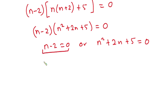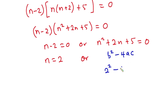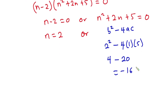From the first factor, n minus 2 equals 0, so n equals 2 straight away. For the quadratic, let's check whether it has real roots using the discriminant b squared minus 4ac. Here b is 2, a is 1, and c is 5, so we get 4 minus 20, which is negative 16. Since negative 16 is less than 0, this quadratic has no real roots, so we do not consider it.